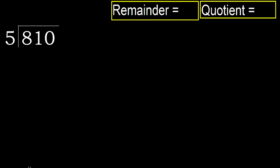810 divided by 5. 8 is not less, therefore work with 8. 5 multiplied by which number is nearest to 8 but not greater? 5 multiplied by 2 is 10, which is greater. 5 multiplied by 1 is 5, which is not greater. Ok, subtract: 8 minus 5 equals 3. Next.